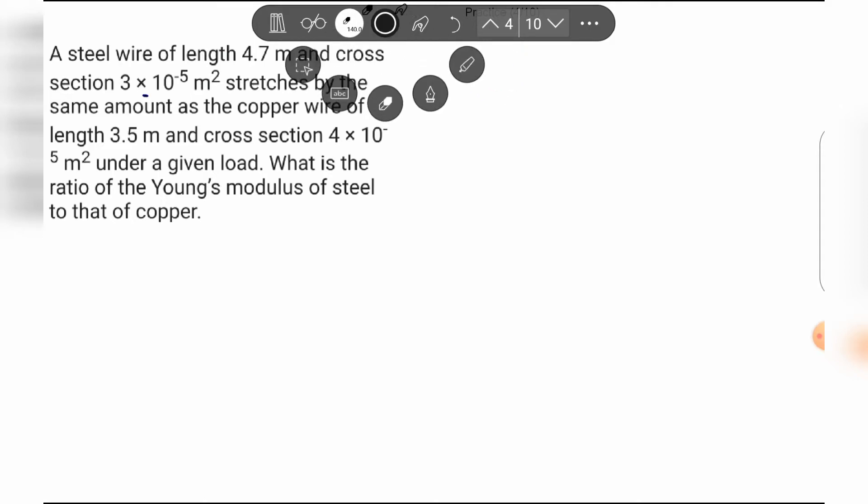First of all, the concept is we need to find out elongation. So delta is equal to PL by AE. This formula is used for steel as well as copper.